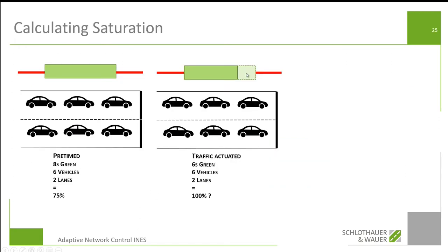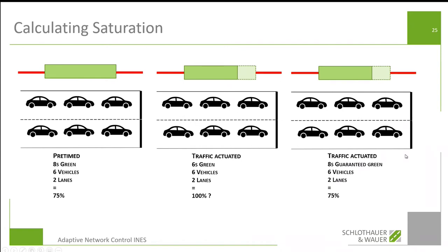At that point in our algorithm, we put in the notion that there were actually two seconds more available — they were just not realized, the controller didn't use them because it didn't need to. But still, there would have been eight seconds. This is what we call the guaranteed green, and we base our calculations on that. That is why we can make decisions for traffic-actuated as well as fixed-time control with this approach.